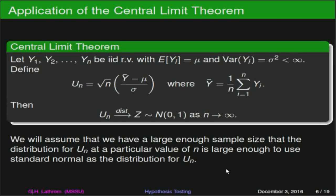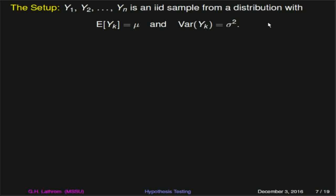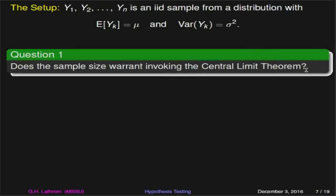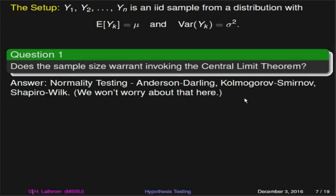The setup for our problems is this: we have random variables y1, y2, up to y-sub-n, which are an independent identically distributed sample, each with a mean of mu and a variance of sigma squared. The first question we should always ask ourselves when gathering data is: does the sample size actually warrant invoking the central limit theorem? That's one of our major questions, and it leads to an entirely different set of questions that fall under the realm of normality testing.